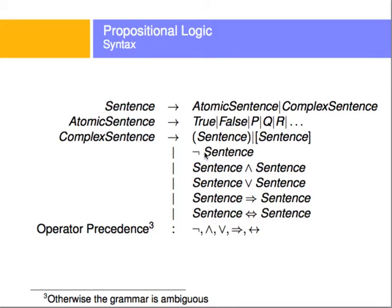Whenever we want to define a logical agent, we need to store knowledge in a knowledge base. We need to tell the knowledge base things about the world — for example, that today is going to rain, therefore people are going to get wet, or that we possess gold and silver. We need to tell it those things with a language, and the way we usually specify languages is by using a syntax.